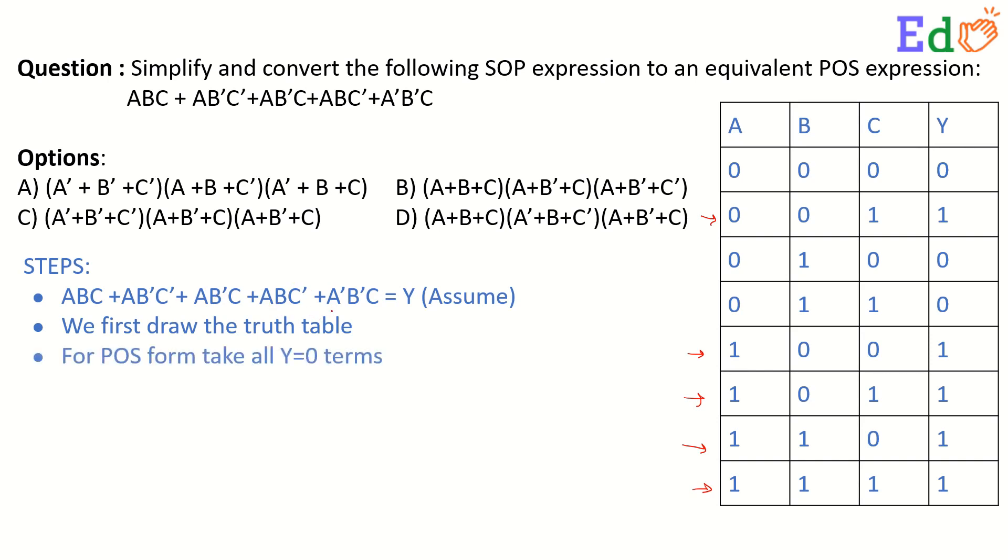From this truth table to generate the product of sums expression, we take the zeros as the considerable outputs and we generate the zeros by a POS expression by the combination of the inputs here.